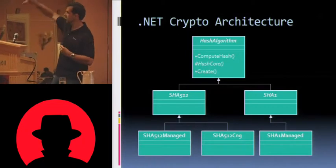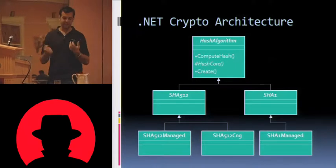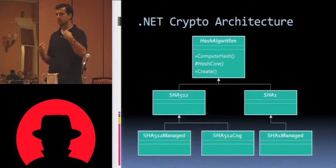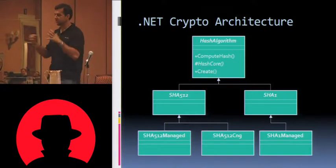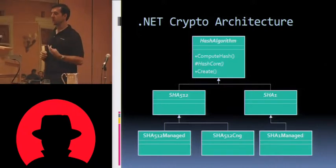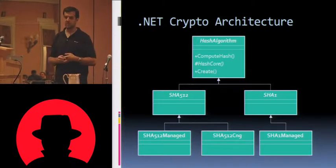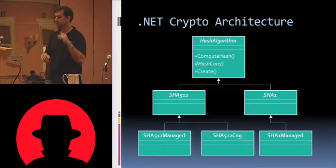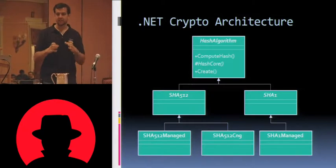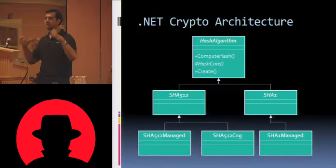You see the hash algorithm abstract class at the top of this UML diagram. In .NET, the particular algorithms derive from hash algorithm. This is just a couple of examples — there are many more that I didn't have space on the slide to show. SHA-512 is another abstract class that derives from hash algorithm. SHA-1 is an abstract class that derives from hash algorithm. MD5 and SHA-256 would be on here too.